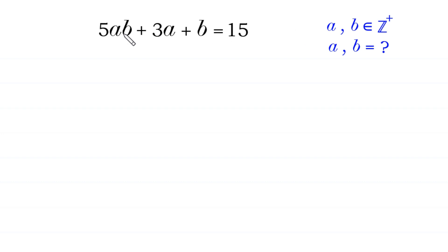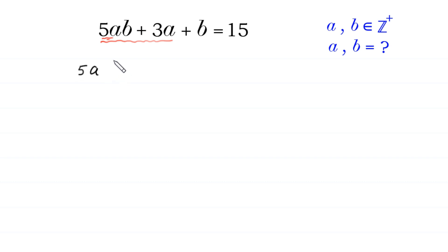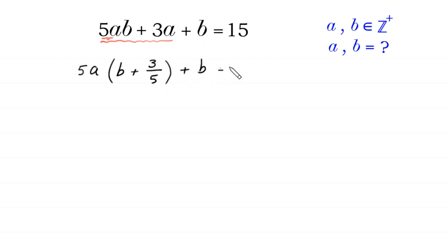First of all, from these two terms, 5ab plus 3a, we factor out 5a. With 5a as a common factor, we get 5a times (b plus 3/5), plus b, is equal to 15.